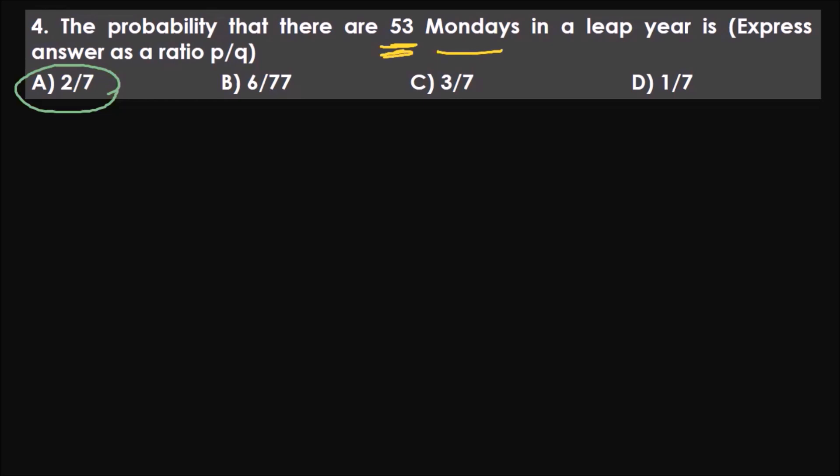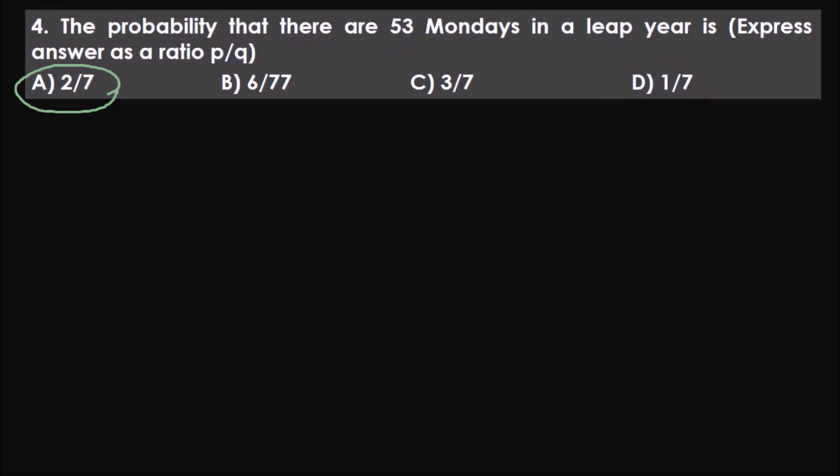If they ask this question in a leap year, the answer will be two by seven. If they ask in a normal year, the answer will be one by seven. Why? A leap year has 52 complete weeks and two extra days. A leap year has 366 days, and when we divide by seven, the quotient is 52 and remainder is two.